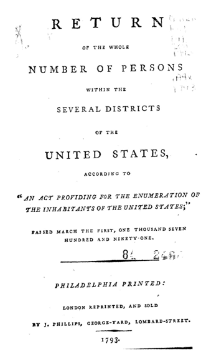Race was asked differently in the 2000 census in several ways. Most significantly, respondents were given the option of selecting one or more race categories to indicate racial identities. Data show that nearly seven million Americans identified as members of two or more races. Because of these changes, the 2000 census data on race are not directly comparable with data from the 1990 census or earlier censuses, and caution is recommended when interpreting changes in the racial composition of the U.S. population over time.